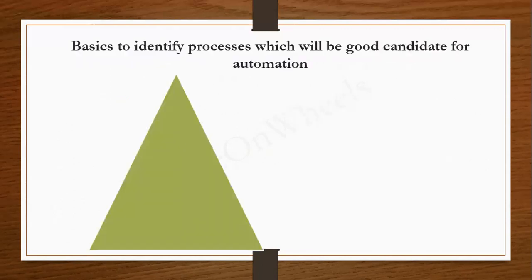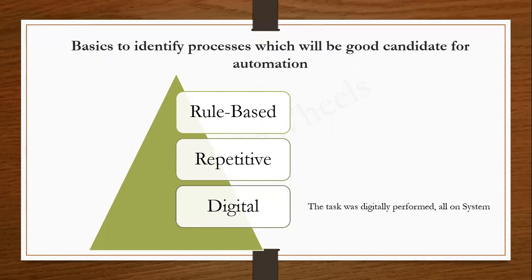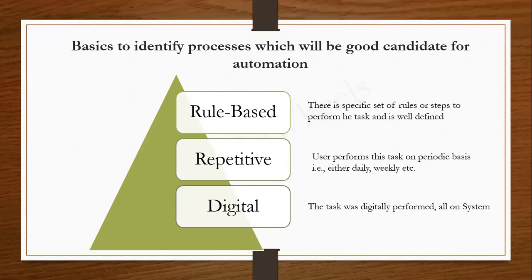The three things that help us identify whether a process is a good fit for automation are: the process was rule-based, it was repetitive — the agent was performing the same activity every day at 4 o'clock — and it was digital, meaning everything was done on the system itself, nothing physically. Repetitive means the specific set of actions has to be done on a periodic basis — daily, weekly, bi-weekly, or twice daily. It's not ideal to spend time writing code for a process that is only a one-time activity.